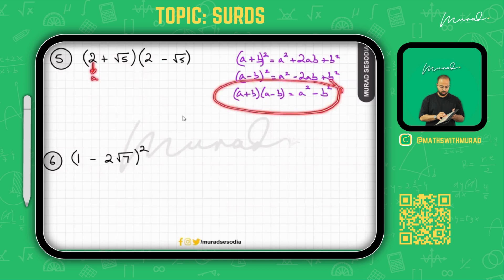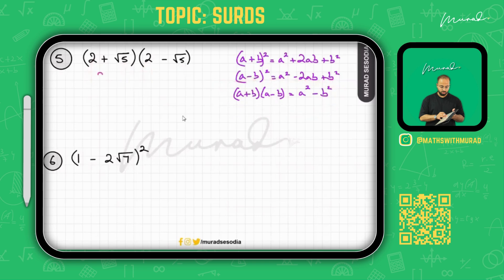Using the identity a² - b²: we have 2² - (√5)² = 4 - 5 = -1. So that gives a final answer of negative one.